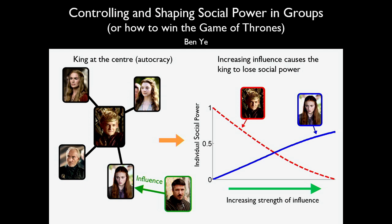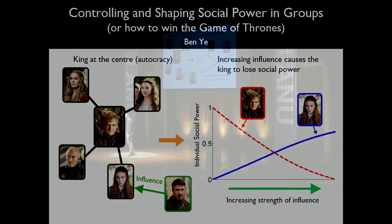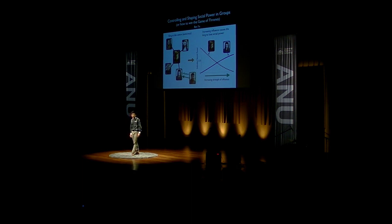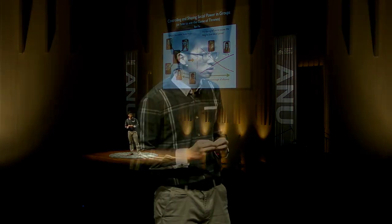Using the existing de Groot-Friedkin mathematical model, it's possible for us to calculate each person's social power in a group. It depends on factors such as who talks to who and the strength of their interpersonal relationship. For a group shaped like a star, all of the individual social power collects at the center with our king. In other words, we have an autocracy.